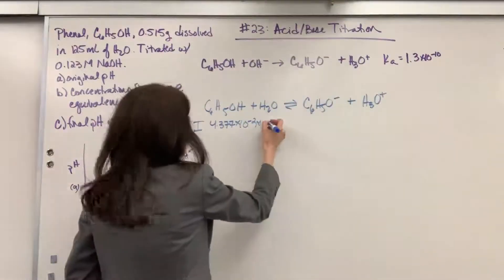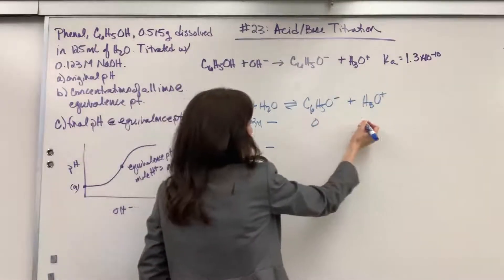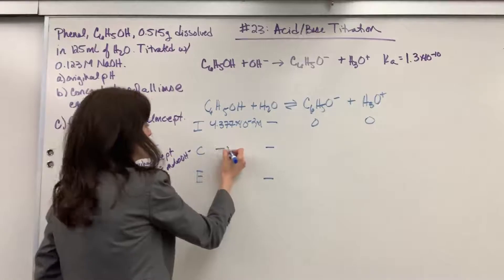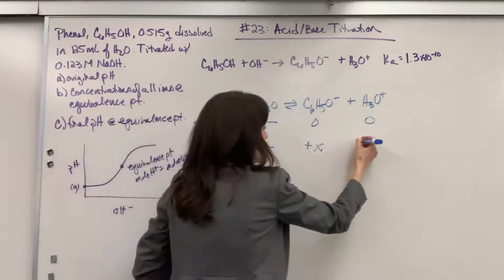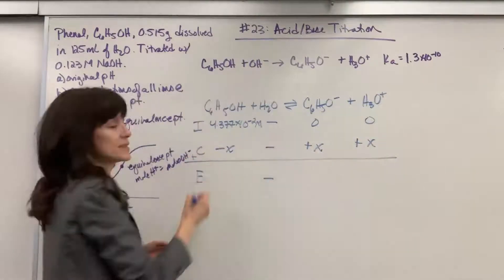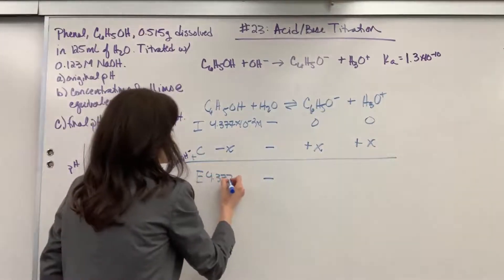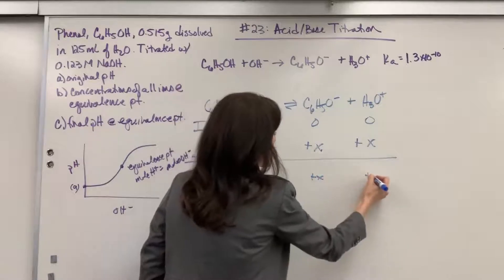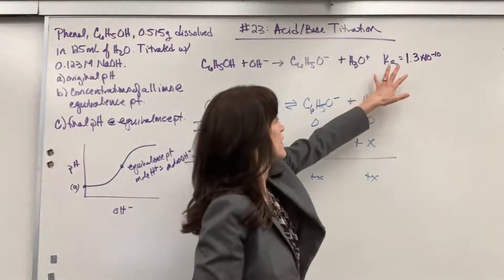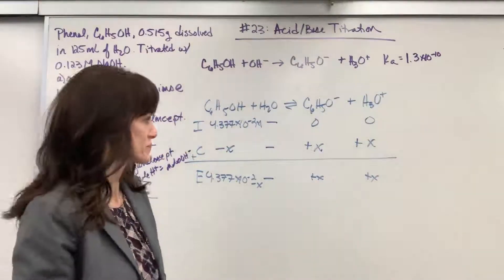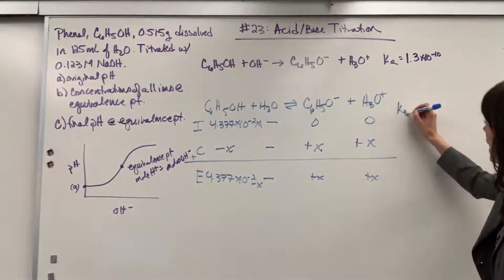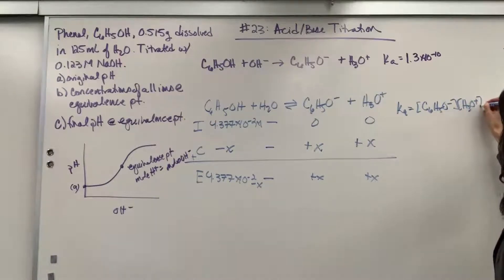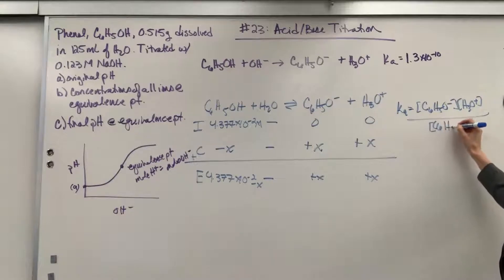Water is a liquid, so I put a dash here because we don't use liquids in equilibrium. We have zero of the conjugate base because this is in pure water, and we have zero of the hydronium. Now the phenol reacts with the water, so we're going to lose an amount of the phenol and gain an amount of the anion and hydronium. For E, all we have to do is add I plus C. We get 4.377 times 10 to the minus 2 minus X, plus X, plus X. Zero plus X is X, zero plus X is X. The Ka value for phenol is 1.3 times 10 to the minus 10.